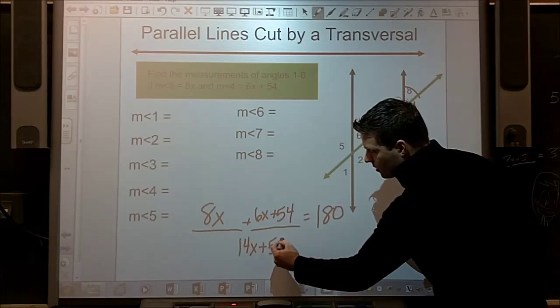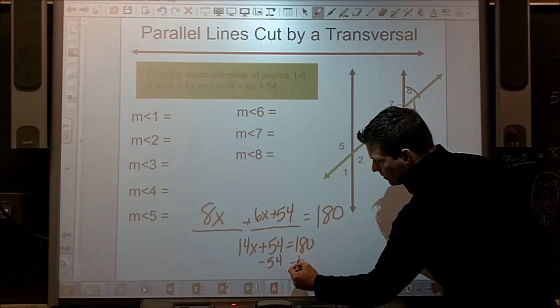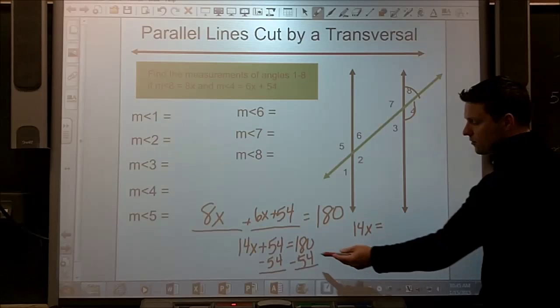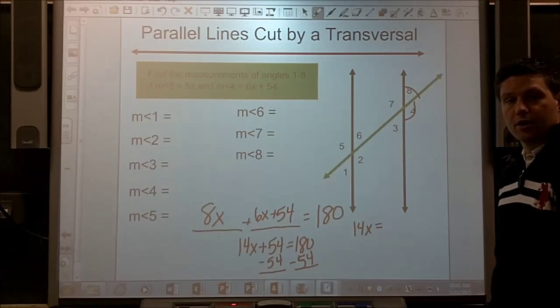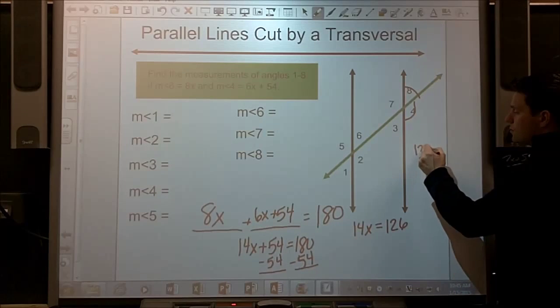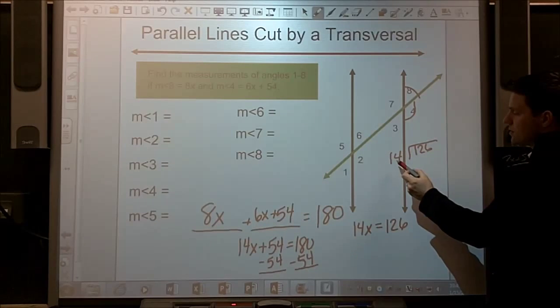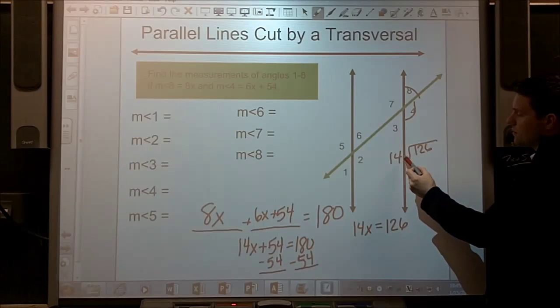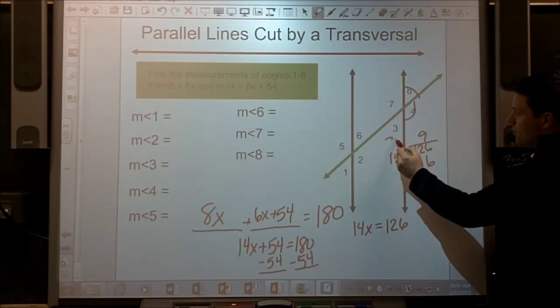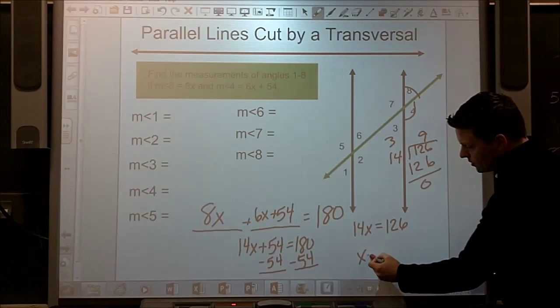14x plus 54 is equal to 180. Subtract 54. 14x equals, well, if it was just 50, it would be down to 130. So, I need to go 4 lower than that. So, 126, and let's see, 126 divided by 14, if I do it 7 times, that's not going to be enough. It looks like it might be 9 times. Let's multiply 6, carry 3. 9 times 1 is 9, plus 3 more is 12. Got that right. x equals 9.